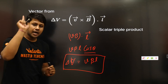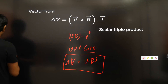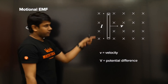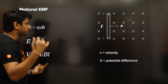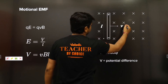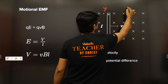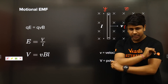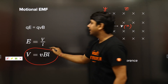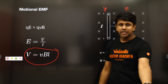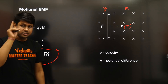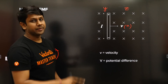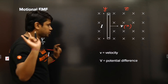Here is the short trick: if velocity, magnetic field, and length are all mutually perpendicular to each other — velocity in x, length in y, magnetic field in z — then you don't need the vector form at all, because it reduces to the same formula. Whenever you see that all three are mutually perpendicular in the question, directly write: potential difference = vBL.